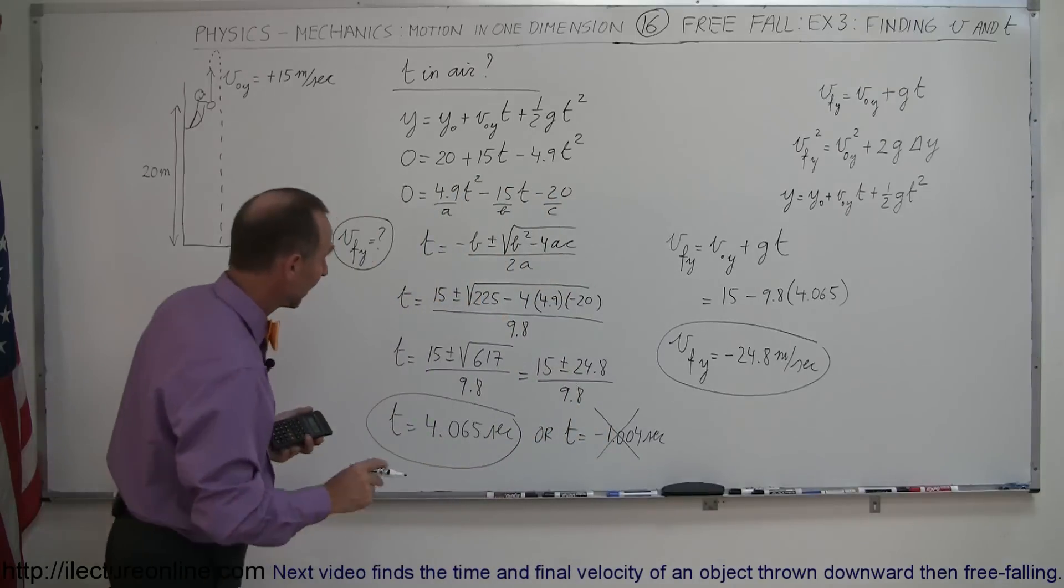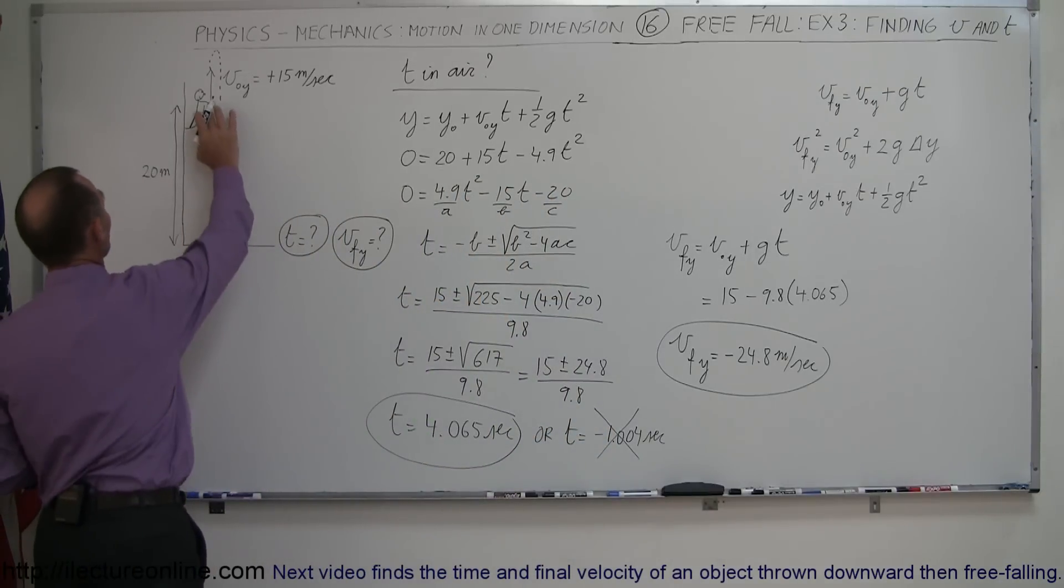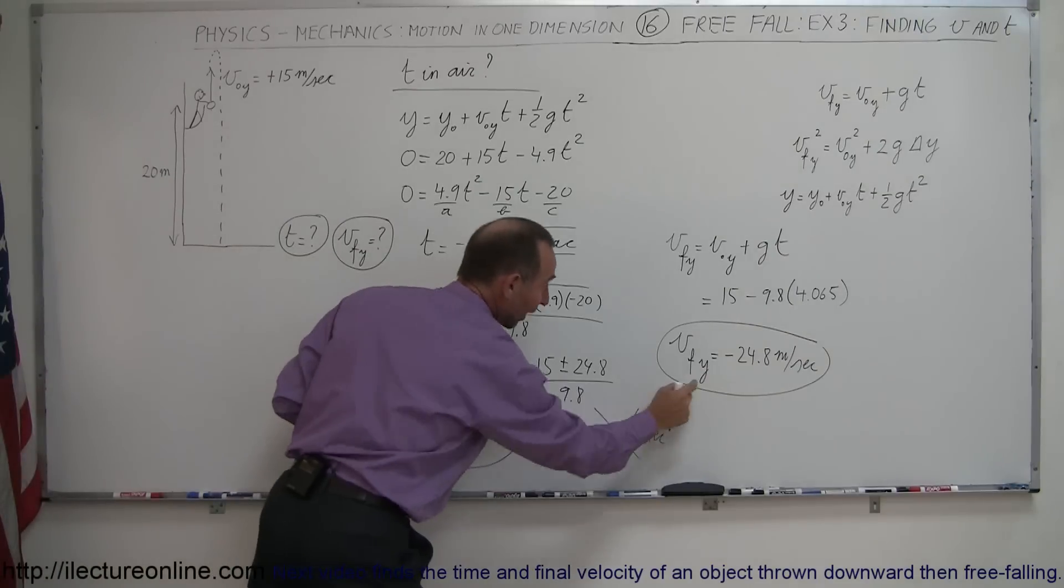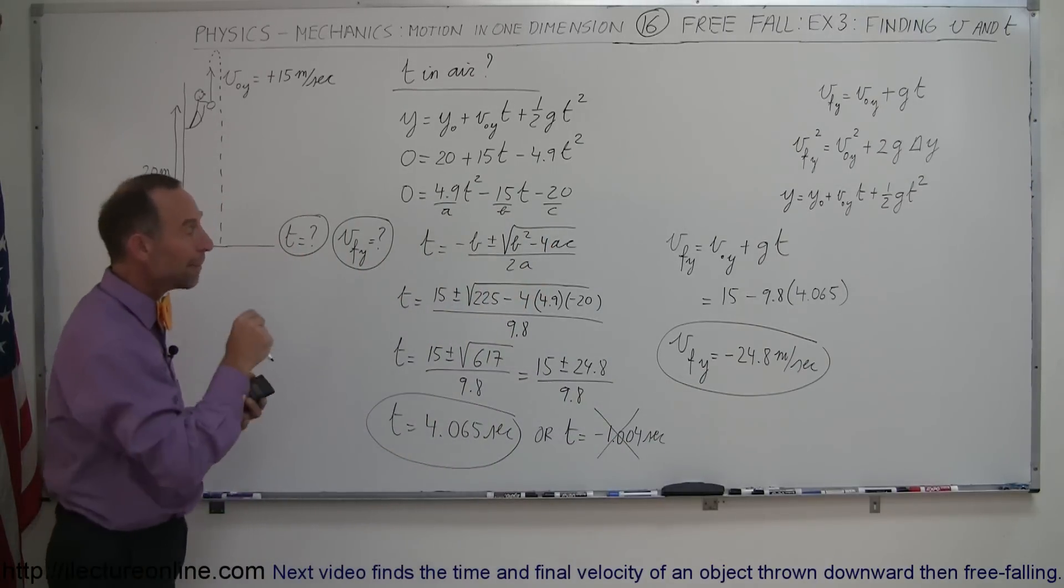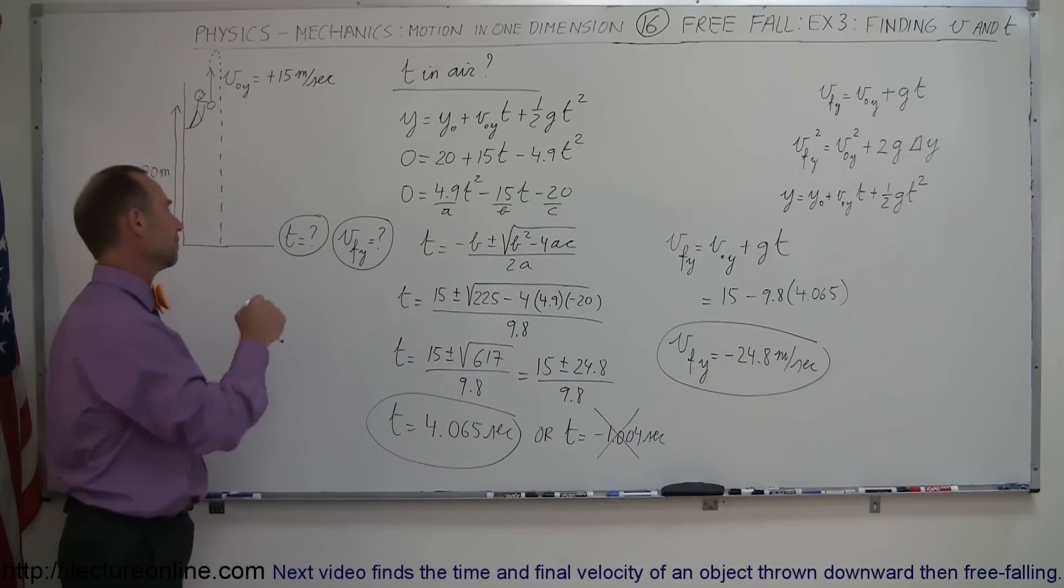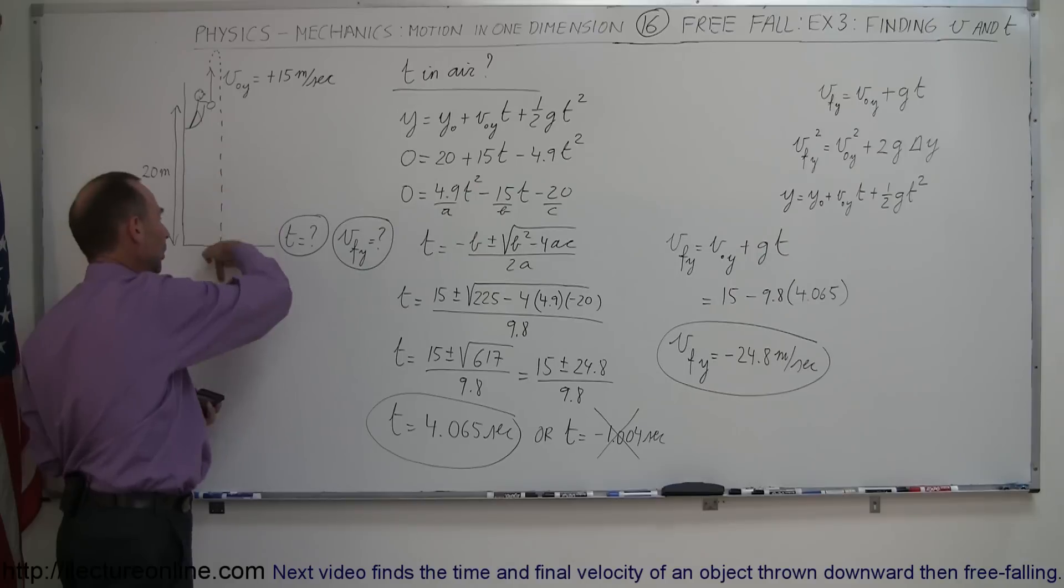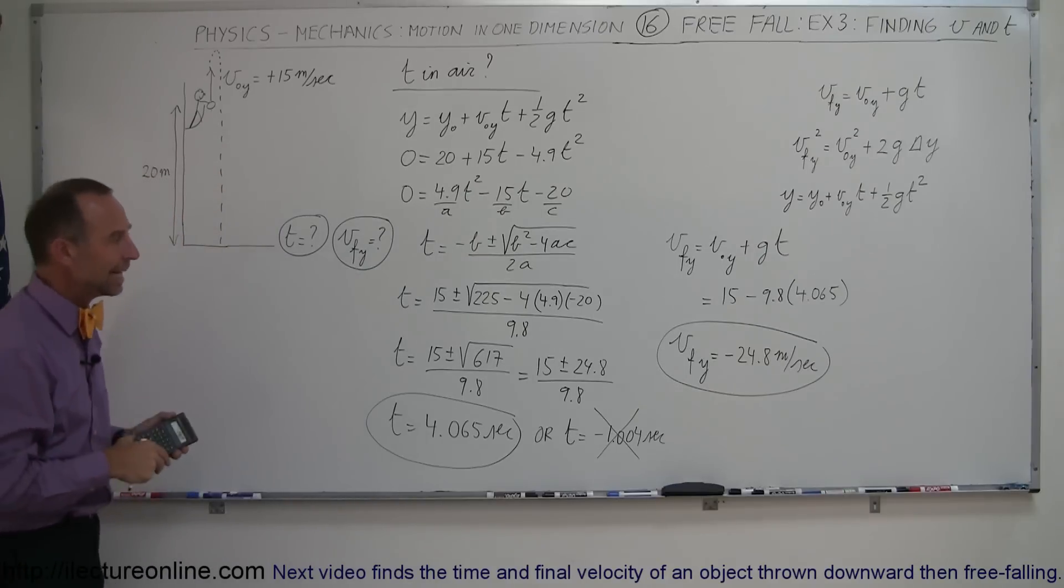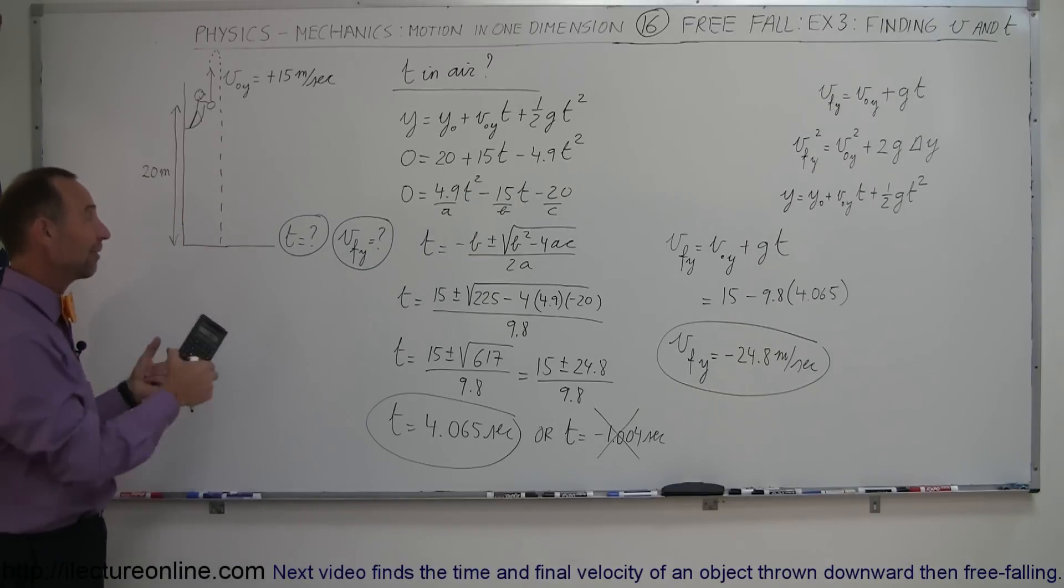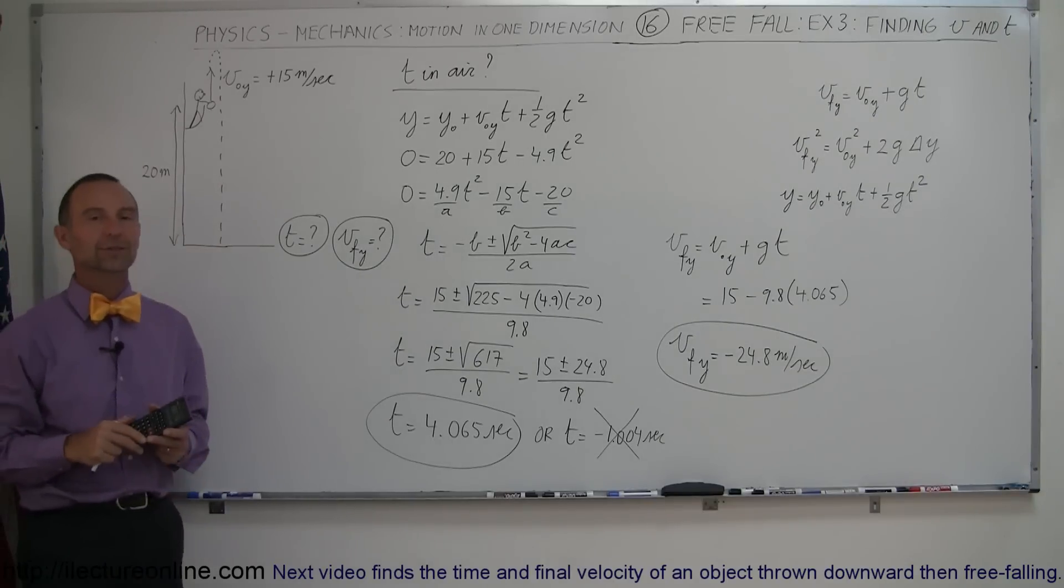So it takes 4.065 seconds to go all the way to the highest height and then fall back down to the ground. And when it hits the ground, it will be going at a minus 24.8 meters per second, and a minus, of course, because it's on its way down. It's moving or traveling in a negative direction. And so that's how you find the time in the air and the final velocity for an object that's thrown up first from a height of 20 meters.